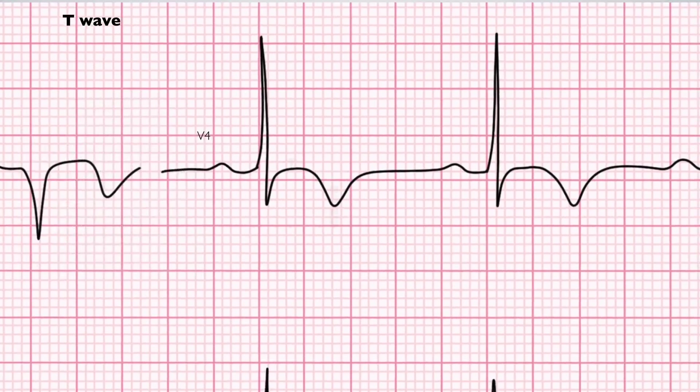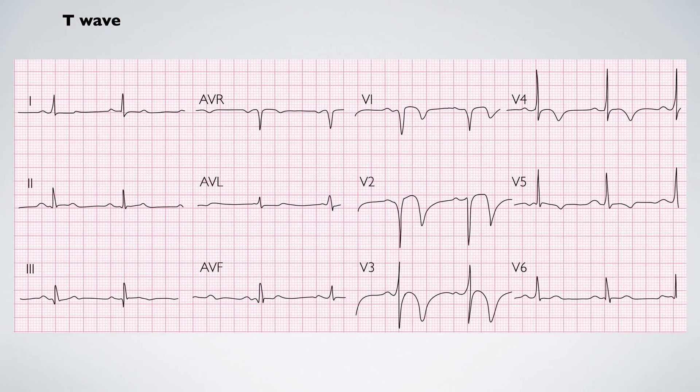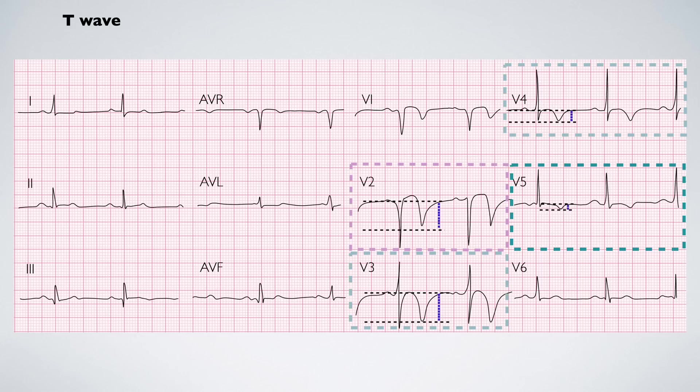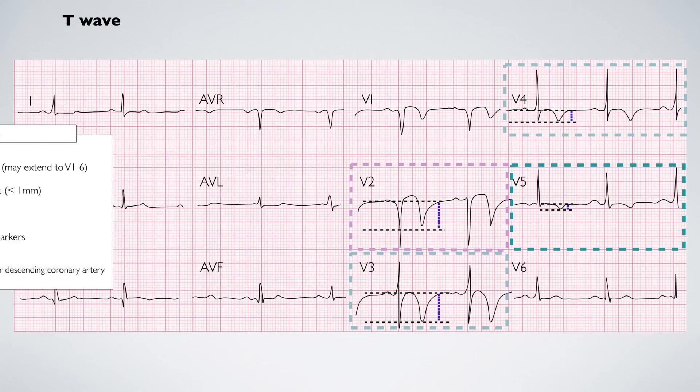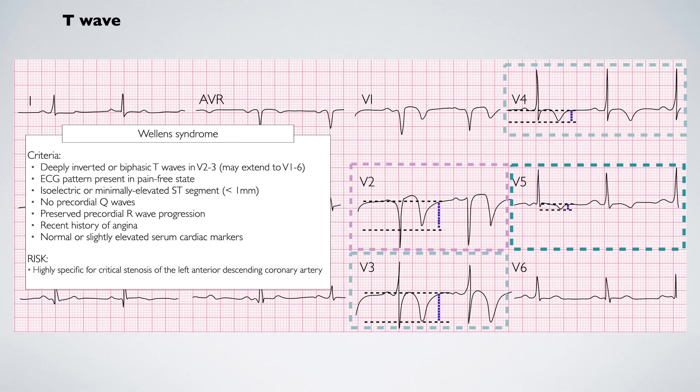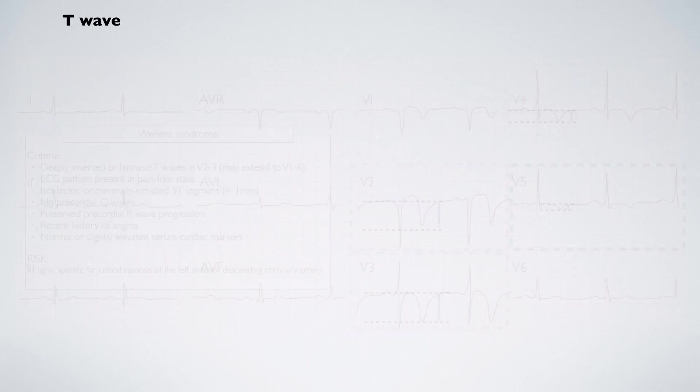If we take a step back and zoom out, you can see there is deep T-wave inversion in leads V1 to V5. Deep T-wave inversion in leads V2 and V3 is a classic ECG presentation of Wellens syndrome, which is highly specific for critical stenosis of the left anterior descending coronary artery.